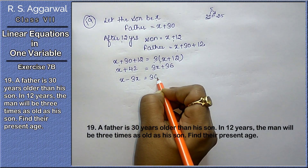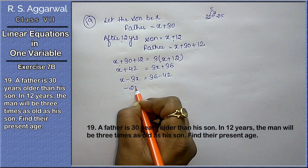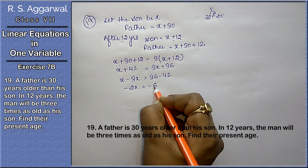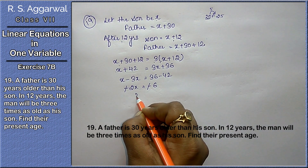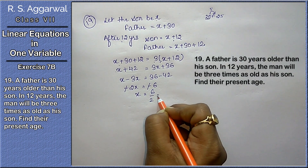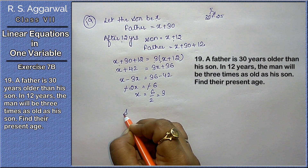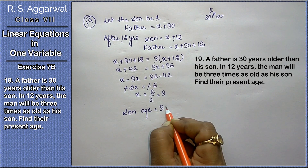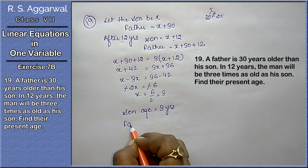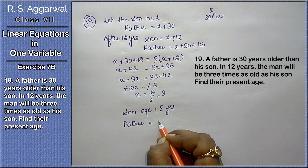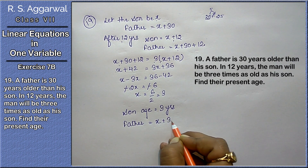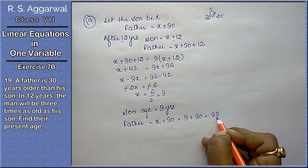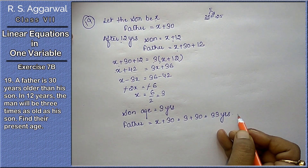Now bringing x terms to one side: x minus 3x equals 36 minus 42, giving minus 2x equals minus 6, so x equals 6 divided by 2, that is 3. So the son's age is 3 years. The father's age is x plus 30, that is 3 plus 30, which equals 33 years.